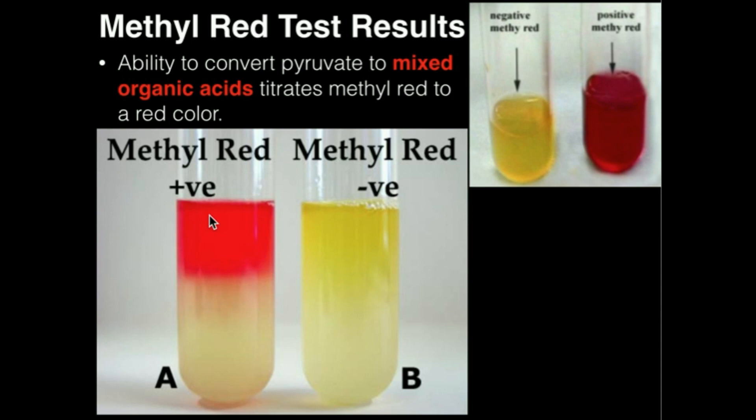Like I mentioned in one of the previous videos where we looked at the indole test, this is another test that's used to differentiate gram-negative bacillus bacteria. Make sure to watch the demonstration on the methyl red test, and then we're also going to look at the Vogts-Perskauer test in the next video. Thank you.